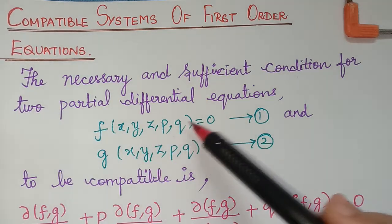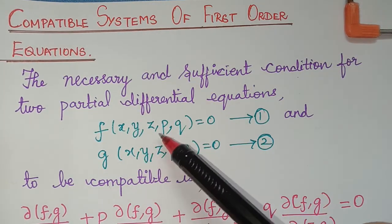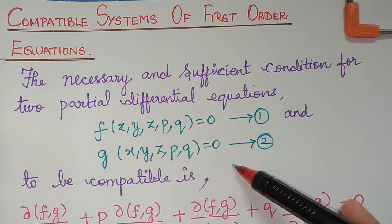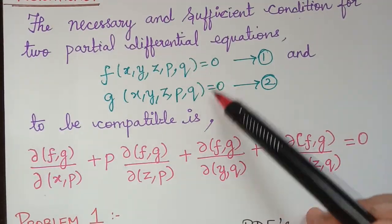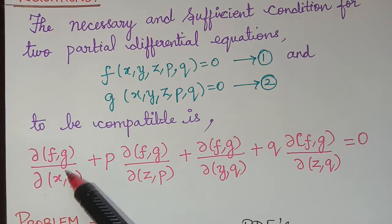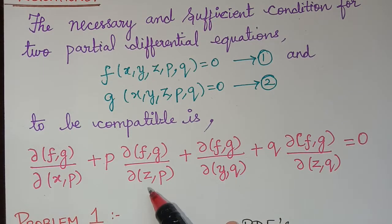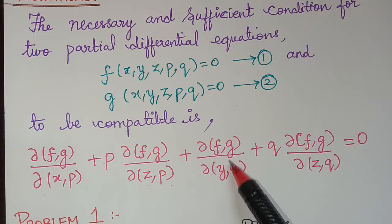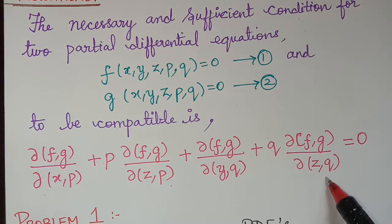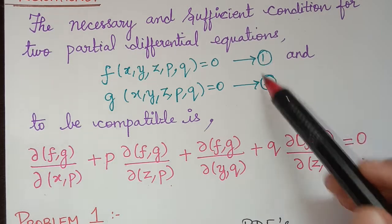for the partial differential equations f(x, y, z, p, q) = 0 and g(x, y, z, p, q) = 0: the necessary and sufficient condition for these two partial differential equations to be compatible is the Jacobian of f and g with respect to x and p, plus p multiplied with the Jacobian of f and g with respect to z and p, plus the Jacobian of f and g with respect to y and q, plus q multiplied with the Jacobian of f and g with respect to z and q, is equal to 0. If we prove this compatibility condition, we can show that the given equations are compatible.